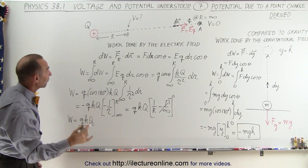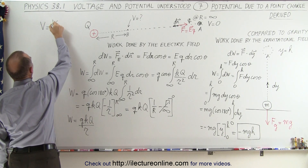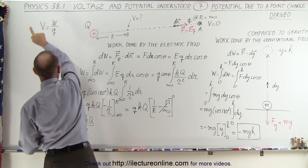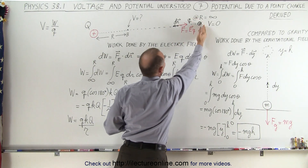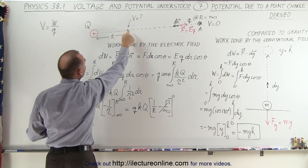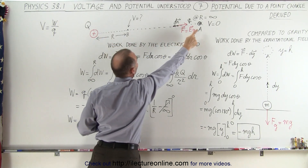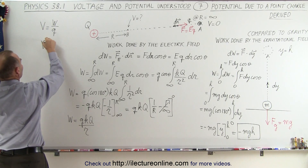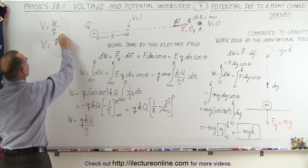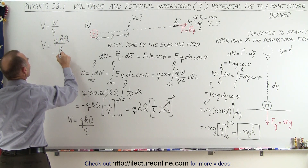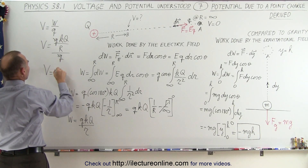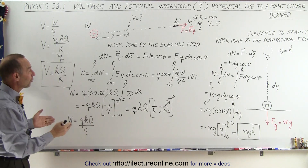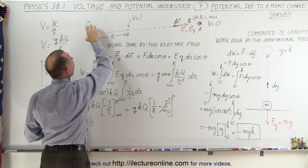Finally, we go back to our definition: voltage is equal to the work done divided by the size of the charge. The reason we don't write delta V here is because we know the voltage is 0 when we start, and we end up with some volts when we finish. The voltage equals the work done — which is qkQ divided by r — divided by little q. The little q's cancel out, and the potential at that location is therefore V equals kQ divided by r. That was the equation shown in the previous video.